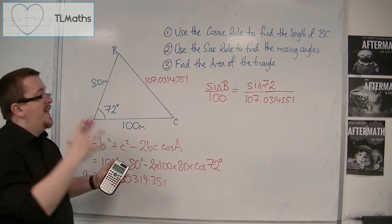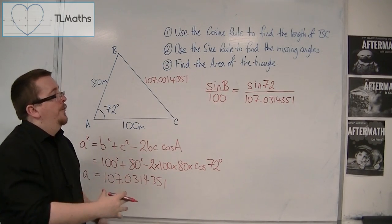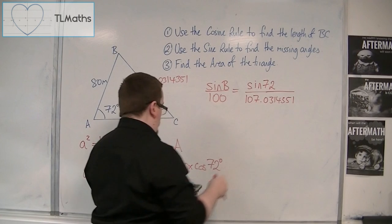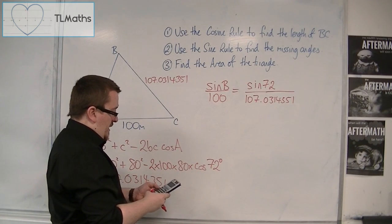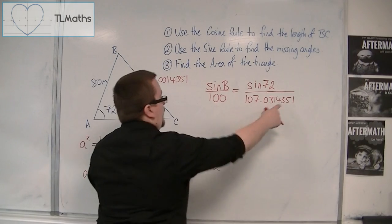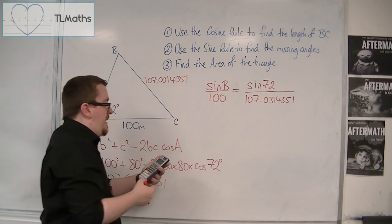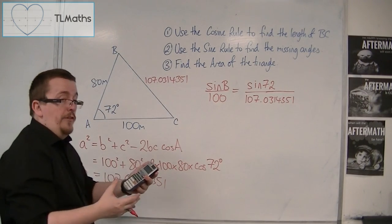OK? Now, conveniently, I've kept that on my calculator. So, I'm going to do sine of 72 divided by answer. OK? Divided by this.